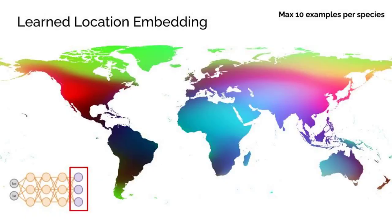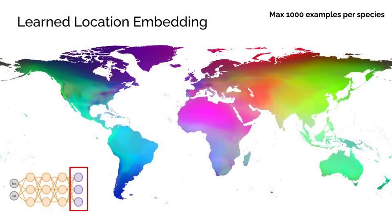To understand why, we can visualize the geospatial representation learned by our model. With 10 examples per species, the representation is smooth. With 1,000 examples per species, there is significantly more spatial detail.